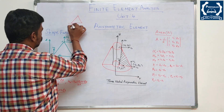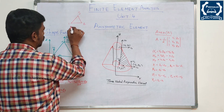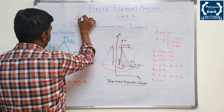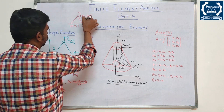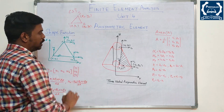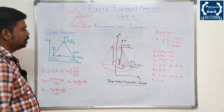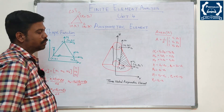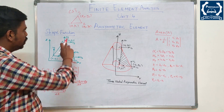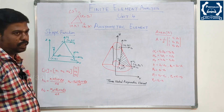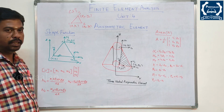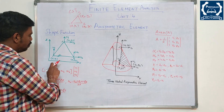The CST element has 3 nodes: 1, 2, 3, with coordinates X1, Y1, X2, Y2, X3, Y3. This is the CST element. For the Axisymmetric element, Unit 3 is the same. We just replace X1, Y1 with R1, Z1. So in CST we use XY coordinates, while in Axisymmetric element we use R and Z coordinates.